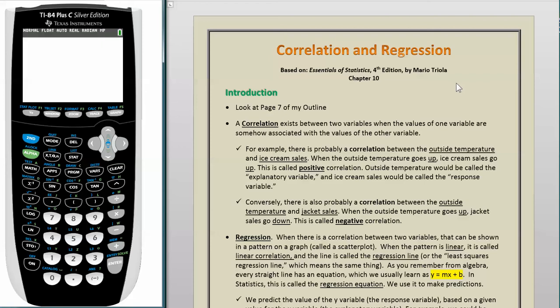The other big term here is regression. This whole chapter is about correlation and regression. When there is a correlation between two variables, that can be shown in a pattern on a graph called a scatter plot. When the pattern is linear, it is called linear correlation, and the line is called the regression line, or the least squares regression line, which means the same thing.